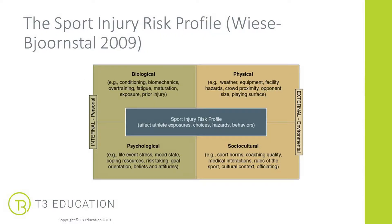The last model to share is the Sports Injury Risk Profile by Wise Bjorn Style from 2009. We'll look at this in more detail in the injury prevention module, but it's important to be aware of it as we progress through the course. This model divides internal and external risk factors into subcategories: biological, psychological, physical, and sociocultural. It brings in additional factors such as psychological and sociocultural elements as potential risk factors, which is particularly interesting. Consider that injury risk includes more than just hereditary, predisposing, or physical and environmental factors.